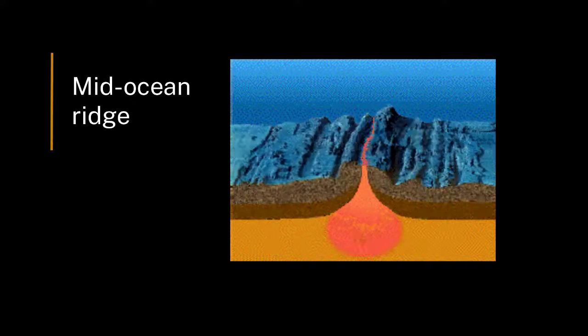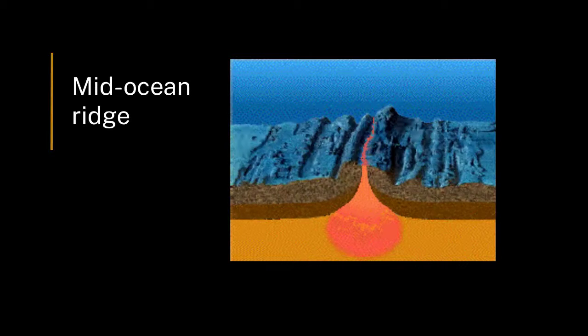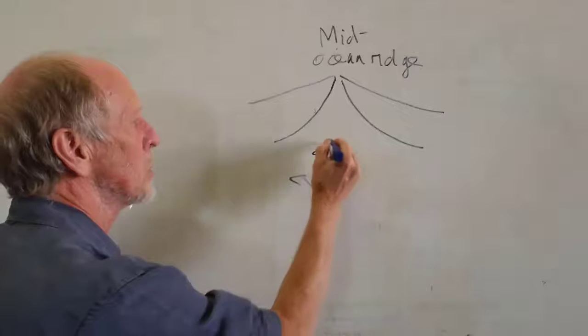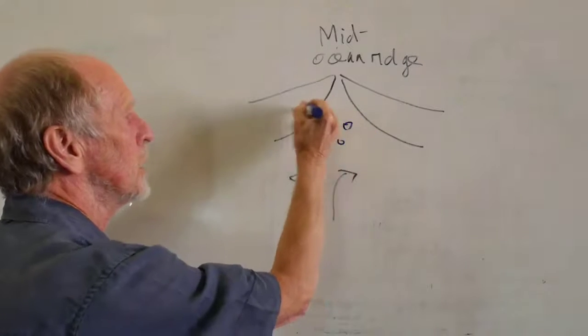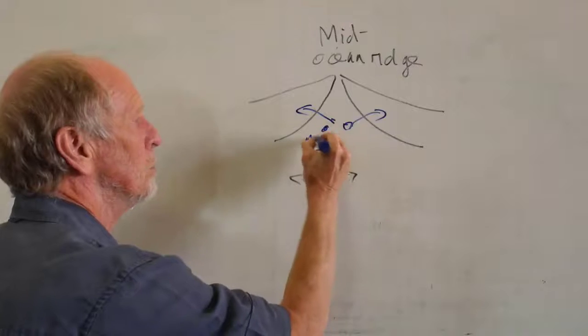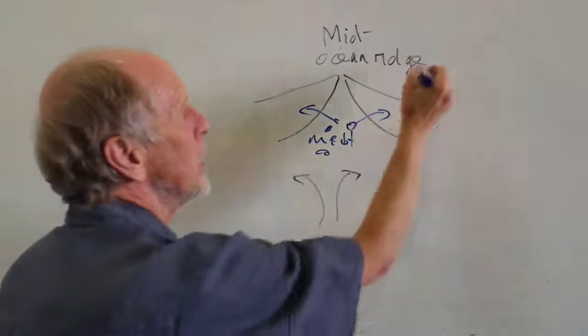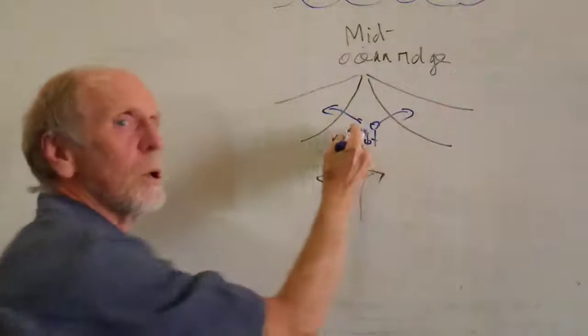We decompress the mantle and melt it, partially melt it. So this is not red, but you get the idea that this melt makes the basaltic crust. And then, because this is mostly underwater...